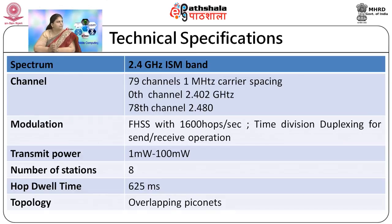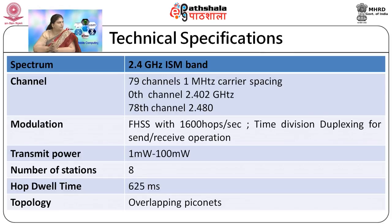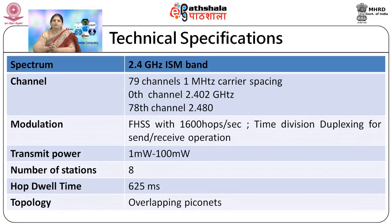The modulation technique used is frequency hopped spread spectrum with 1,600 hops per second, and between sending and receiving, time division duplexing is used. Transmit power ranges from 1 milliwatt to 100 milliwatts depending on the transmitter class. The number of stations supported is 8, because Bluetooth assigns a 3-bit address to active members, allowing only 8 members in a Piconet.